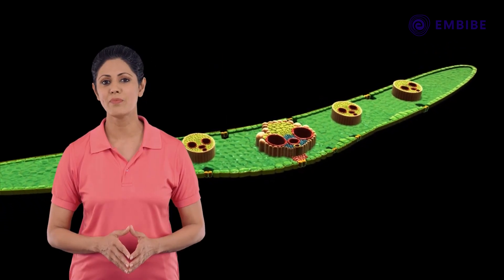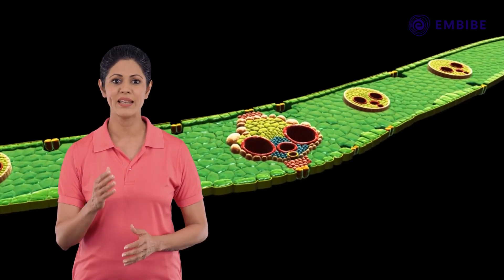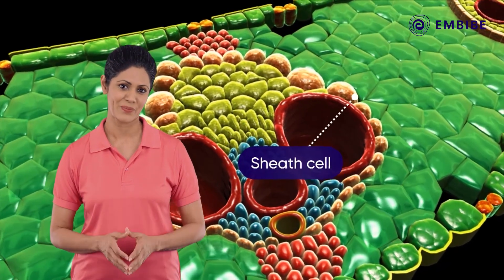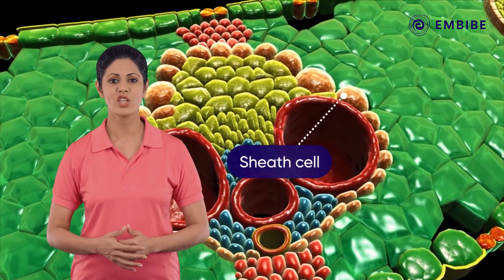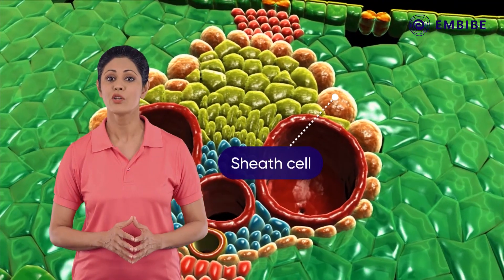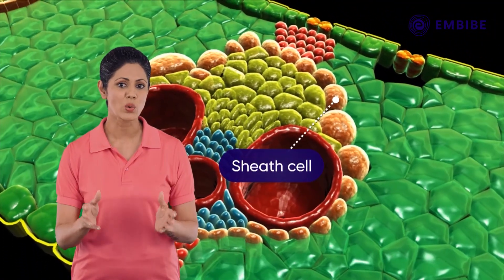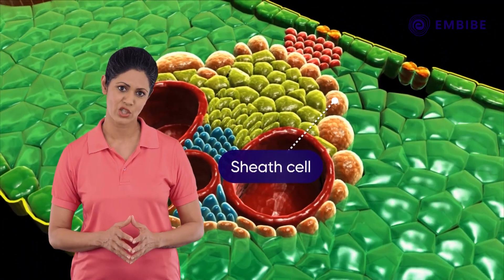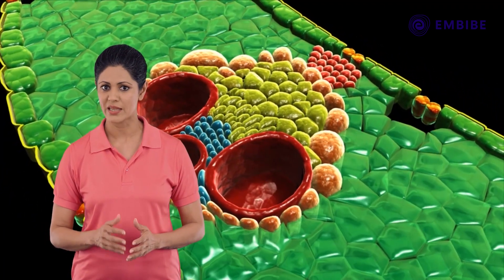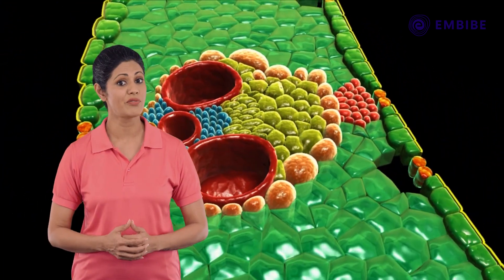The vascular bundles are surrounded by a layer of cells called the sheath cells. The sheath cells primarily function to provide rigidity and protection to the enclosed vascular tissues. The large elements located in the vascular bundle are referred to as the xylem vessels.